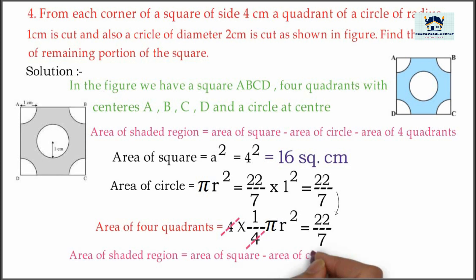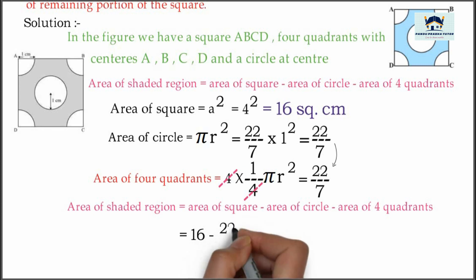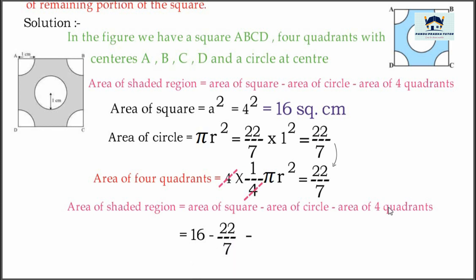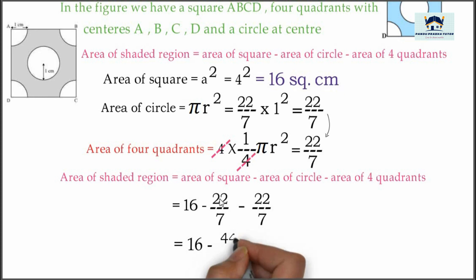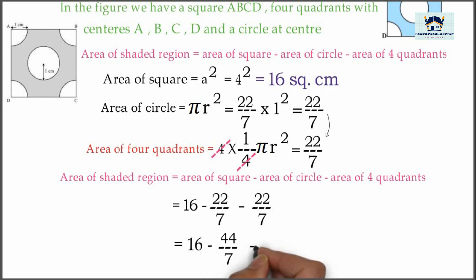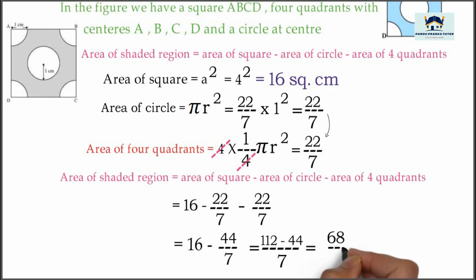Area of the shaded region is equal to area of square minus area of circle minus area of 4 quadrants. Area of square is 16, area of circle is 22 by 7, area of 4 quadrants is also 22 divided by 7. So: 16 minus (22 plus 22) divided by 7 equals 16 minus 44 divided by 7. Taking LCM: 112 minus 44 divided by 7, which equals 68 divided by 7 square centimeter, or 9.71 square centimeter.